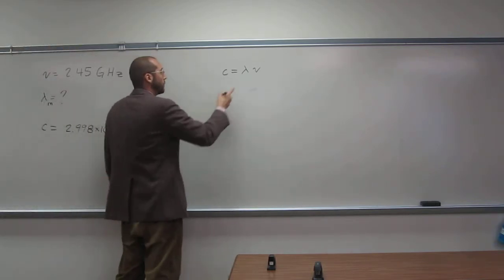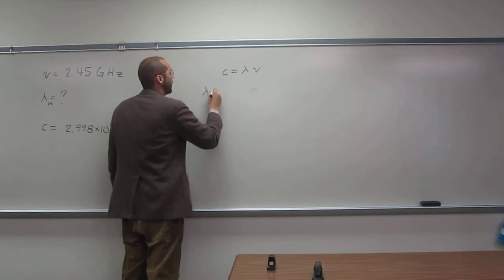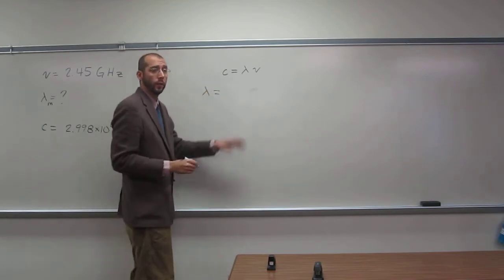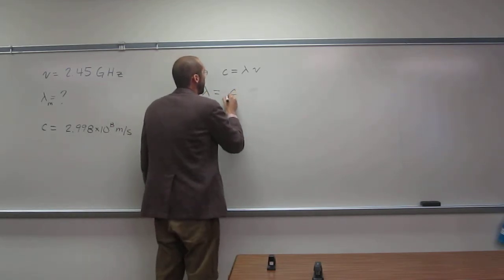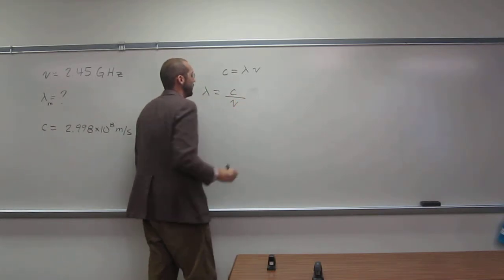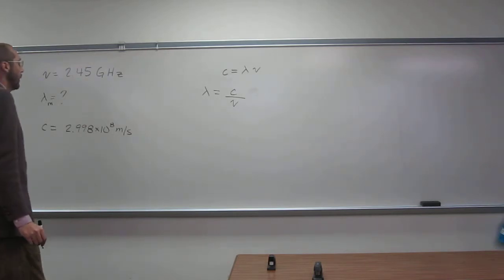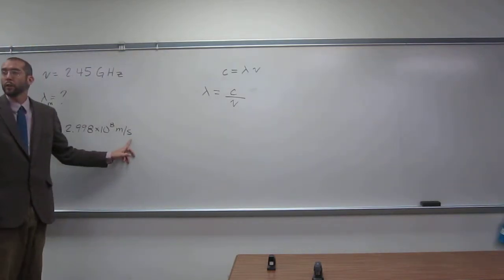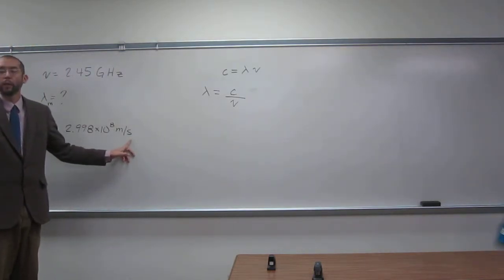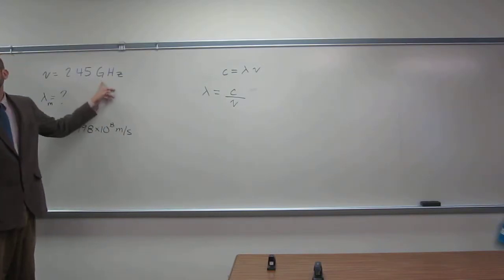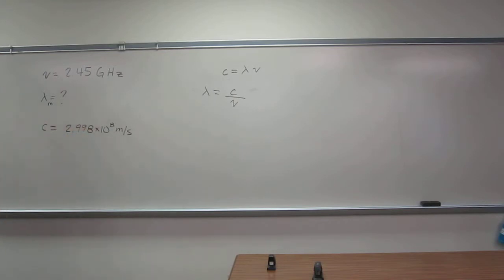So in order to get the wavelength, we're going to have to rearrange this equation. And remember, this is in per second, right, or seconds. Gigahertz is not per second. We need to get it to hertz to get it to per second, right? So we need to convert.